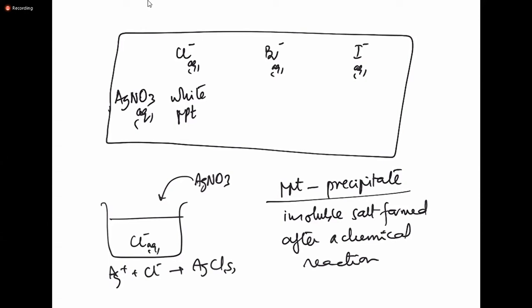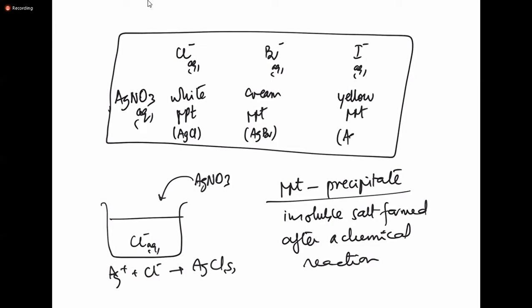Similarly, for bromide ions: silver nitrate gives a cream precipitate — that is AgBr. For iodide ions: silver nitrate gives a yellow precipitate — that is AgI. So to summarize, to test for halide ions you always add aqueous silver nitrate.